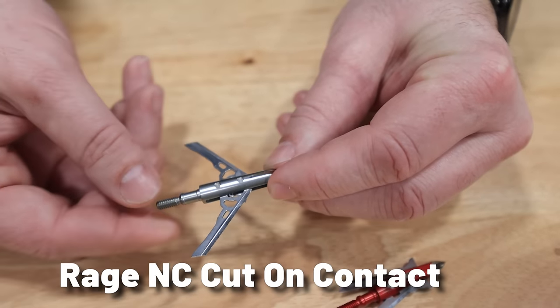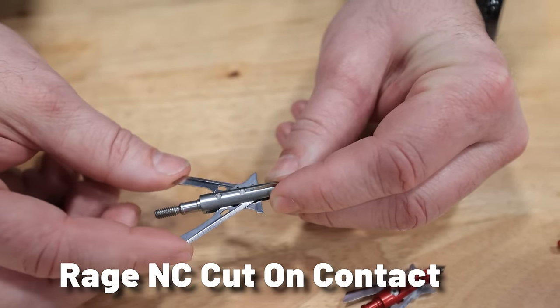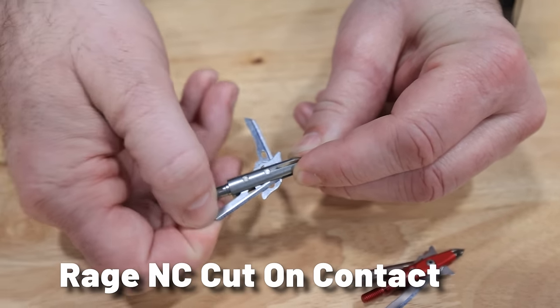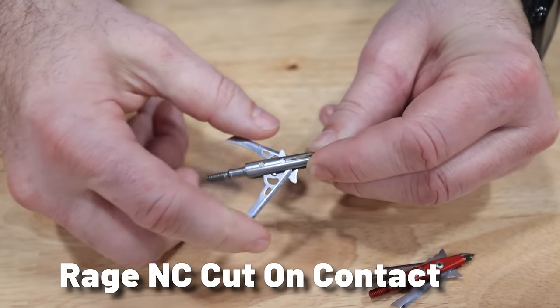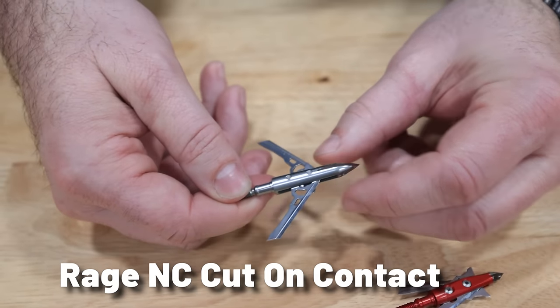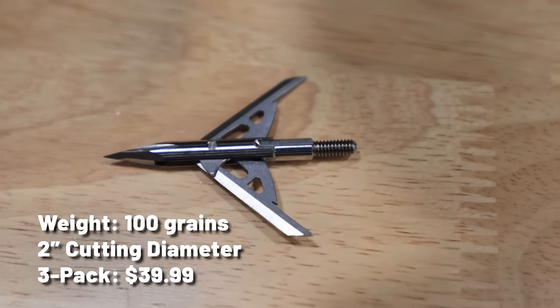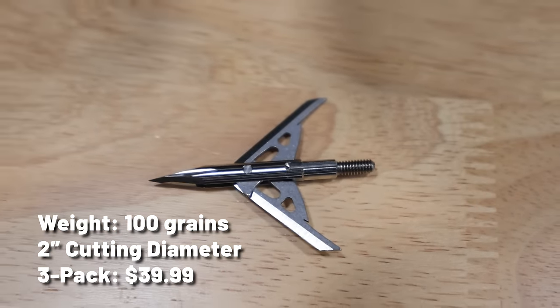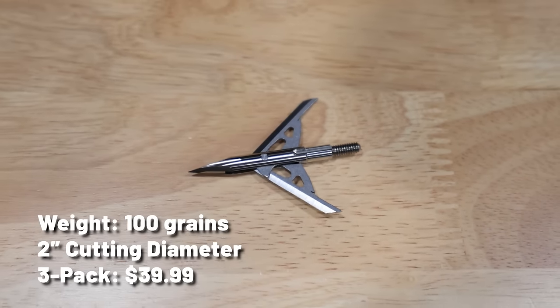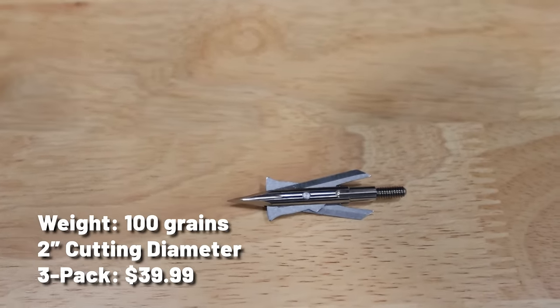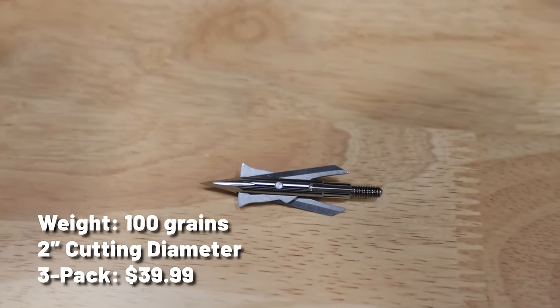Rage NC Cut-On-Contact. The brand that changed the expandable broadhead game all those years ago continues to innovate with their new series of NC no-collar broadheads. New for 2024 is the Rage NC Cut-On-Contact with a collarless blade retention system, 39 thousandths thick cut-on-contact razor tip, and a two-blade, two-inch cut provided by the 35 thousandths thick blades. The Rage NC Cut-On-Contact features an anodized aluminum ferrule and weighs 100 grains. They are going to retail at $39.99 for a three-pack.